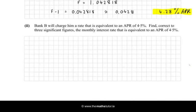Now, Bank B will charge him a rate that is equivalent to an APR of 4.5%. Find correct to three significant figures the monthly interest rate that is equivalent to an APR of 4.5%. Okay, well, very similar. We'll use the future value formula.